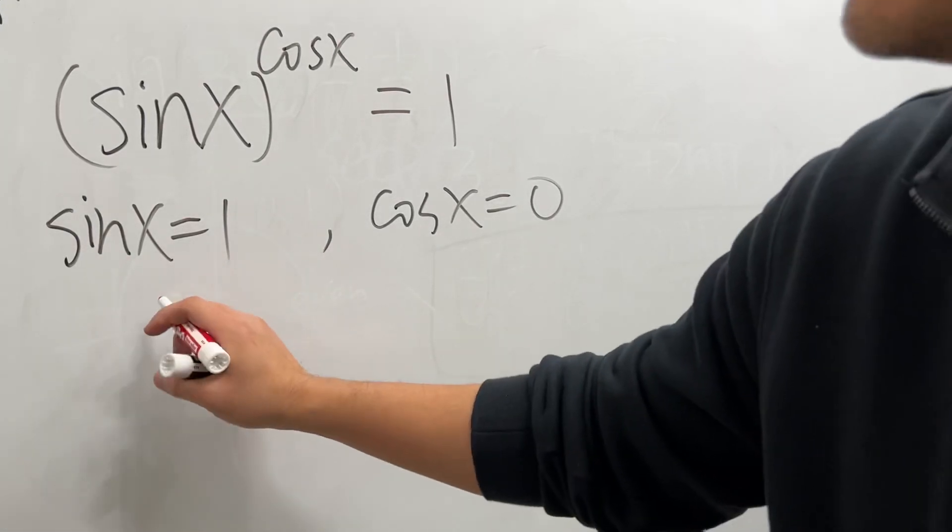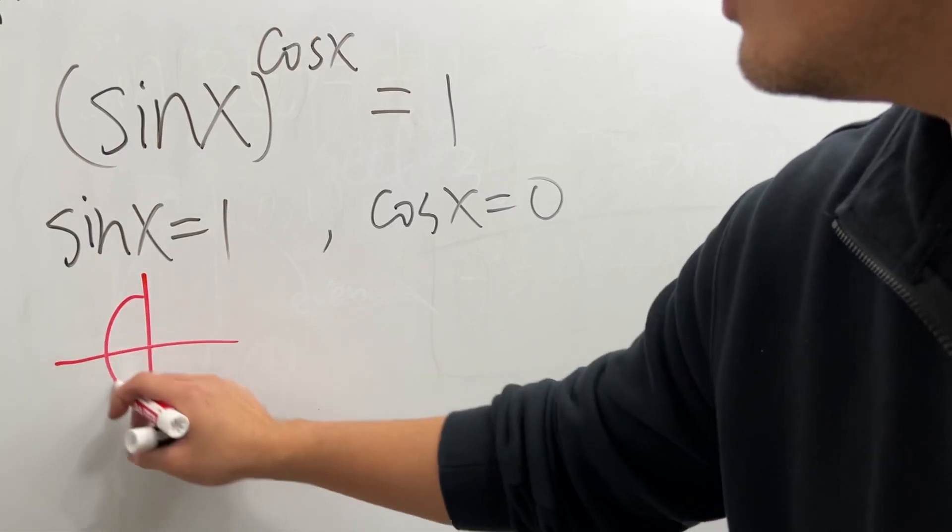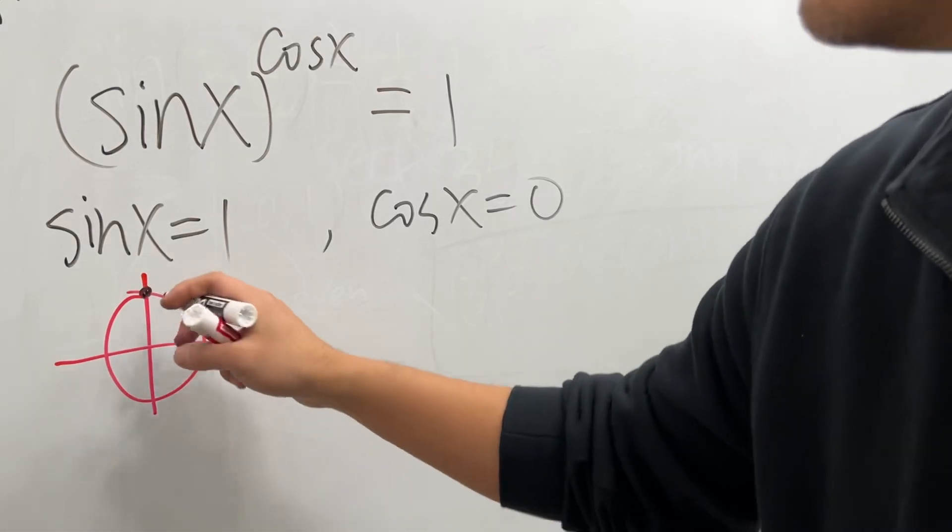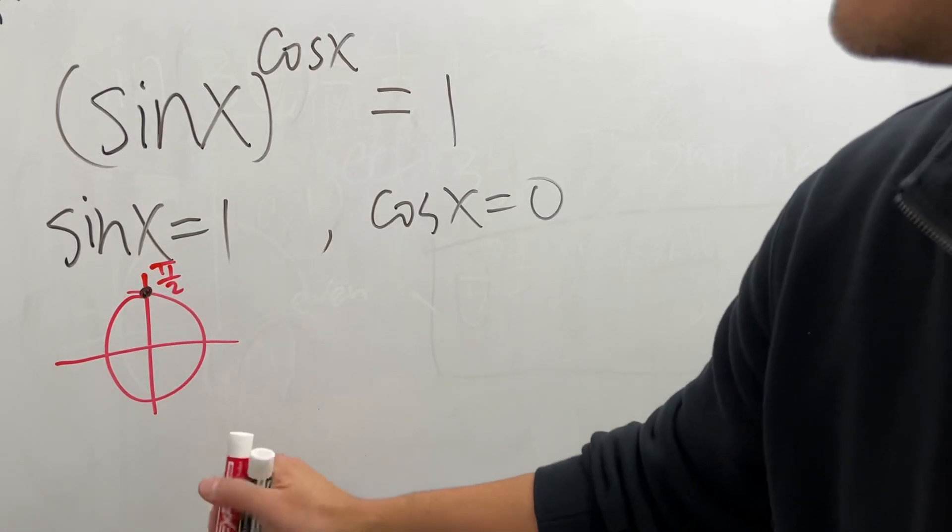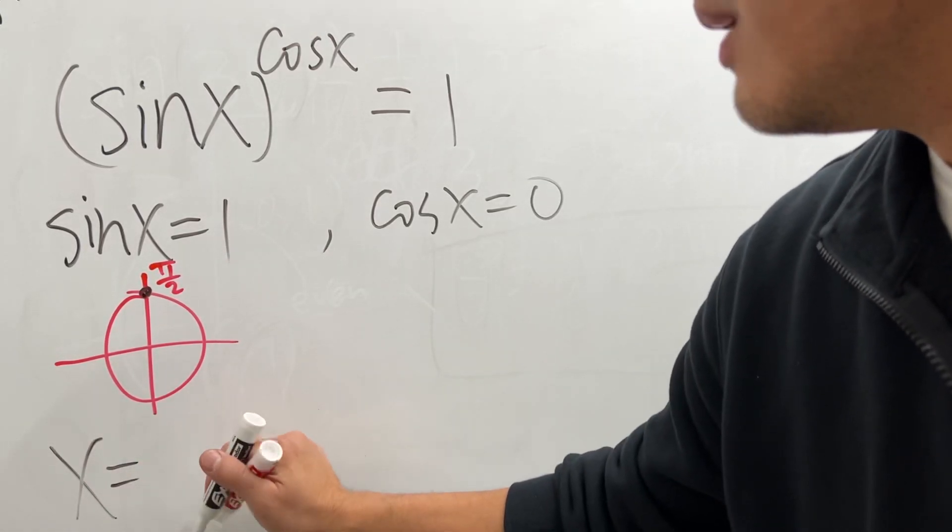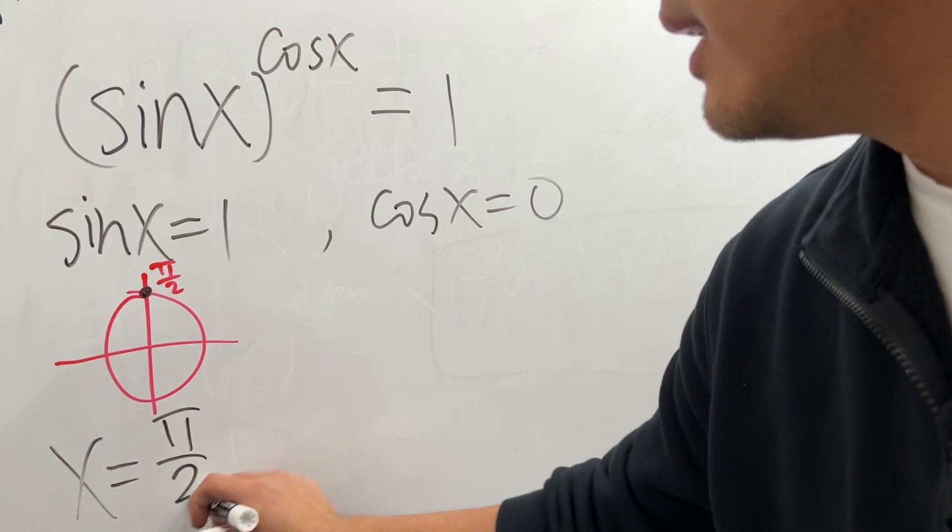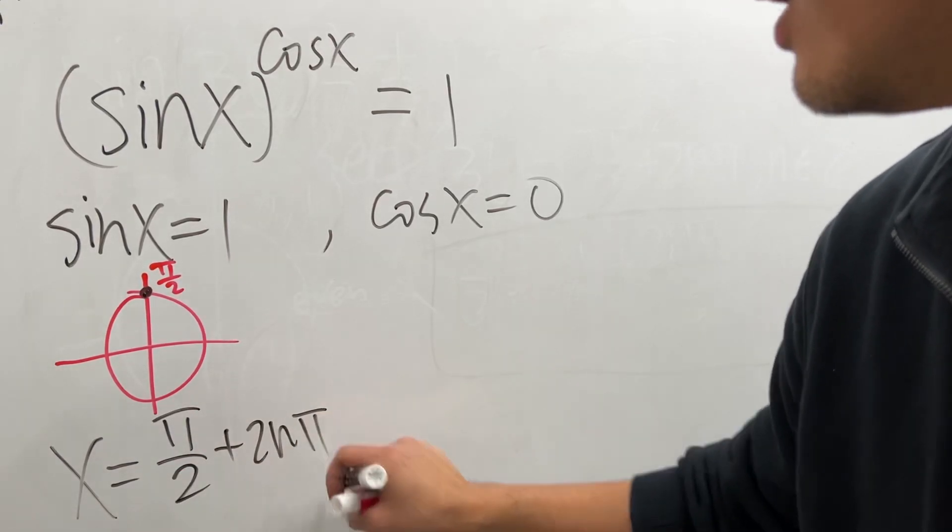So sin x equals 1. That means we are looking at the unit circle right here, which is pi over 2 right here. That's the first angle. And then just go ahead and say x equals pi over 2, and then we add 2n pi where n is an integer.